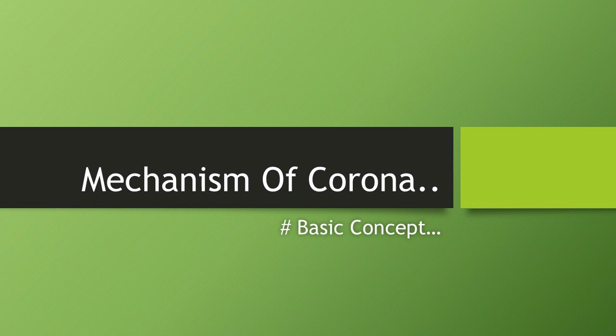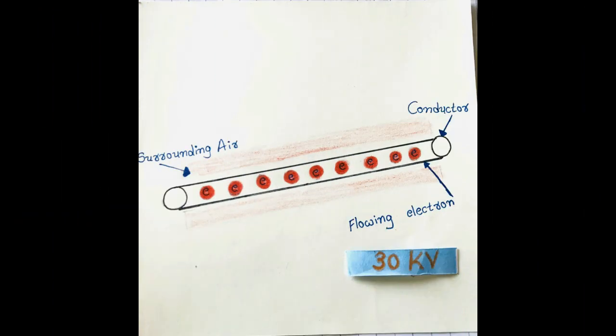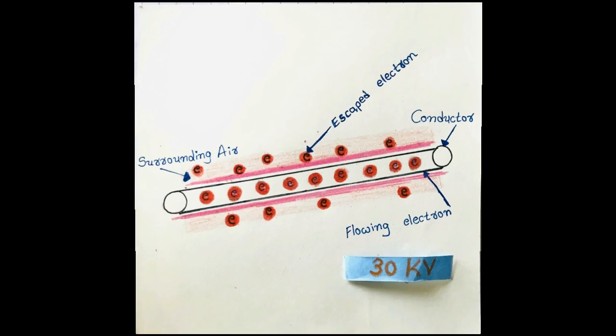Mechanism of Corona: When an alternating current is made to flow across two conductors of transmission line whose spacing is large compared to the diameter, then air surrounding the conductor is subjected to dielectric stress. At low values of supply voltage nothing really occurs as stress is too less to ionize the air outside.